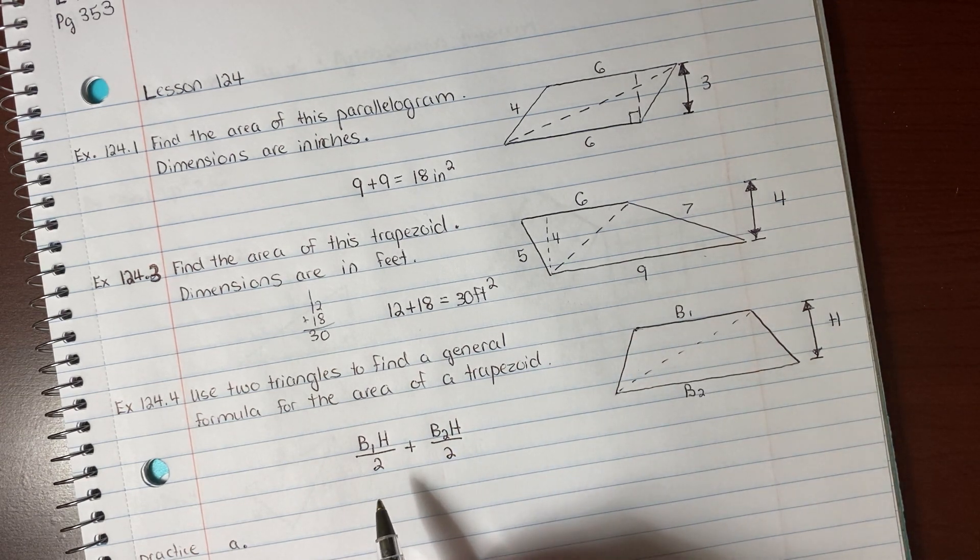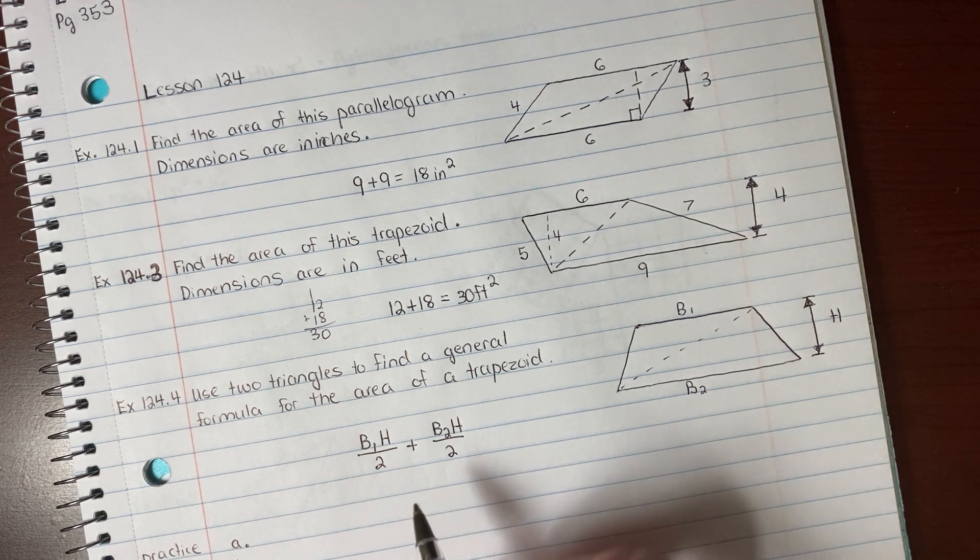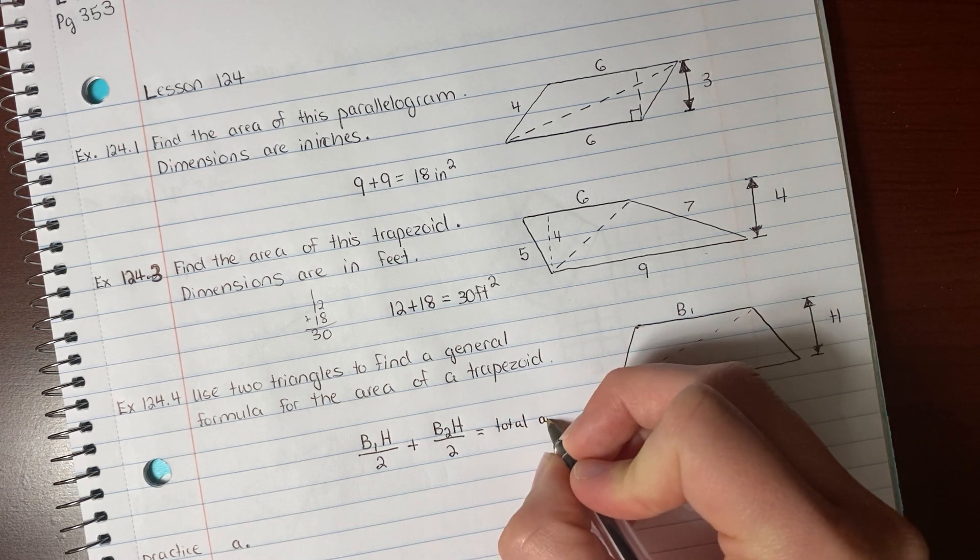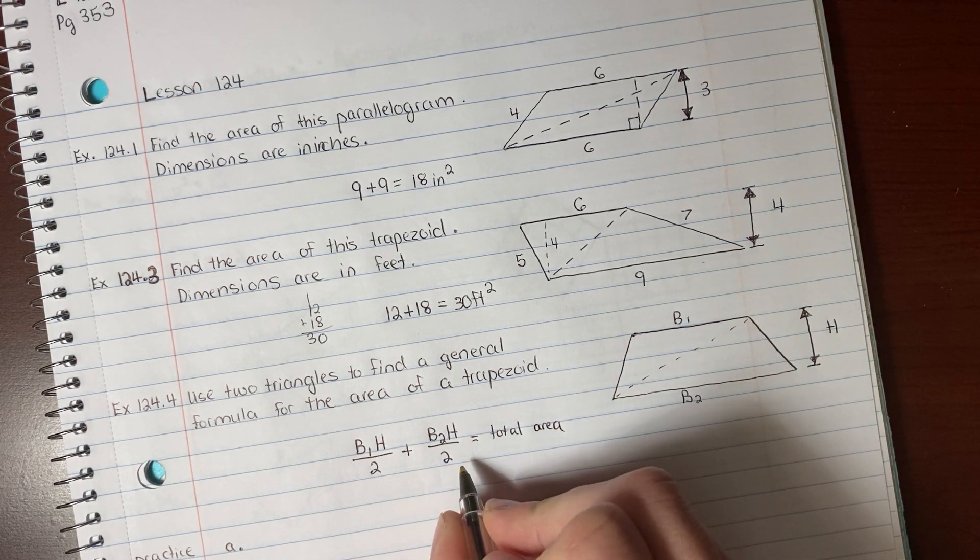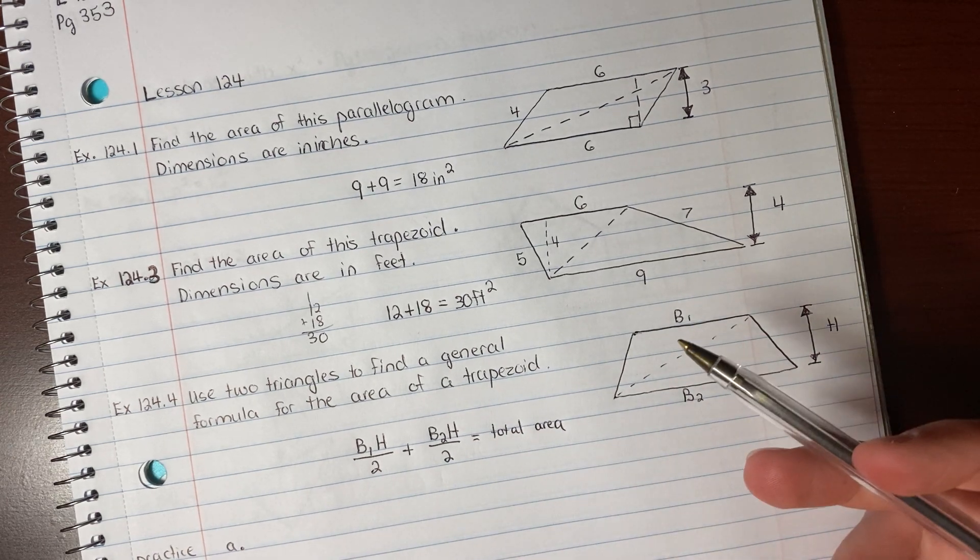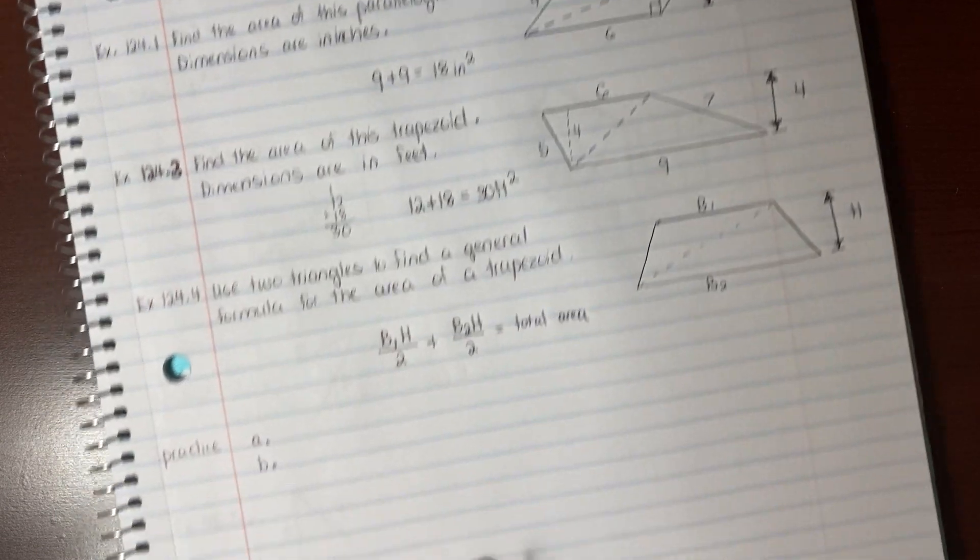So we have half of base times height. Half of base times height. And we would add those. And that would get us the total area. So that would be a formula. Then give them the actual numbers. And all they would need to do is put the numbers in. And they would get the right answer.